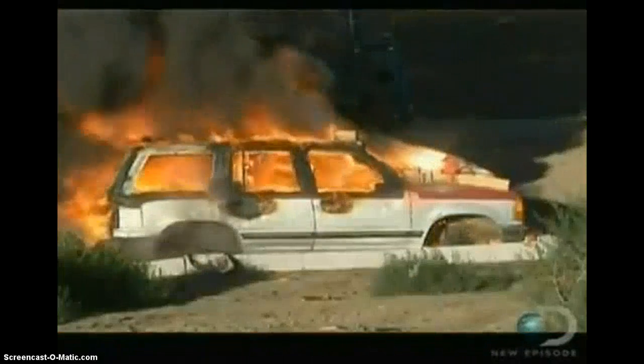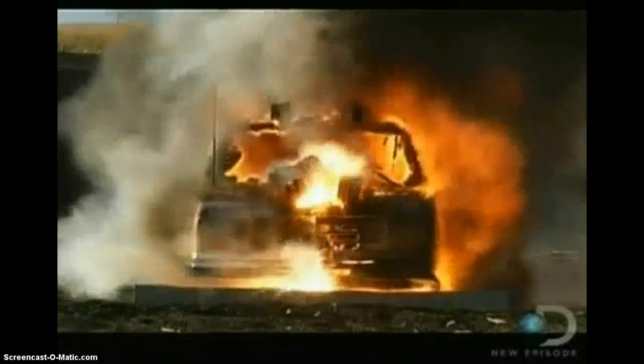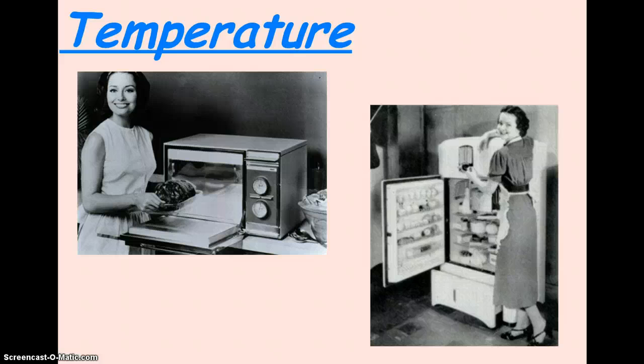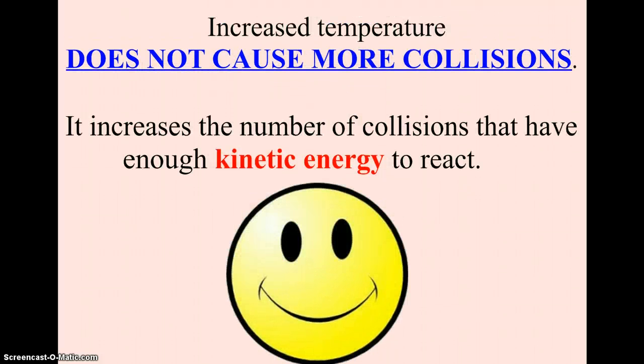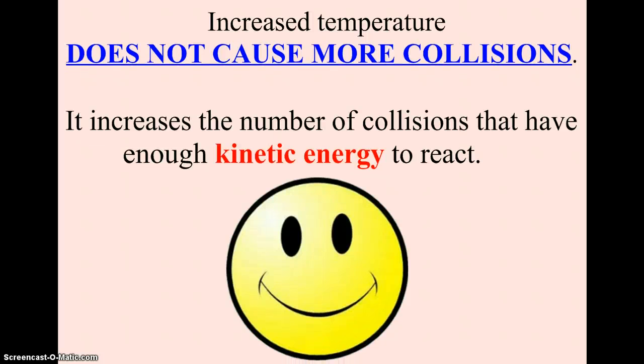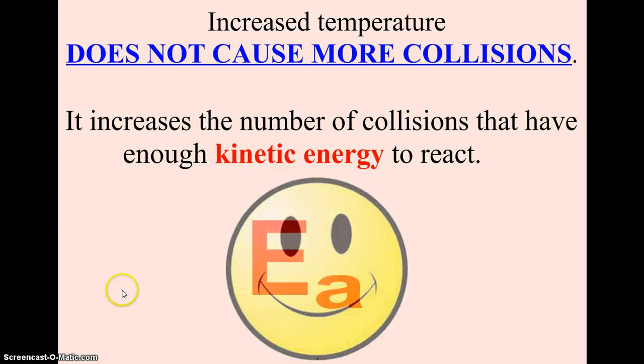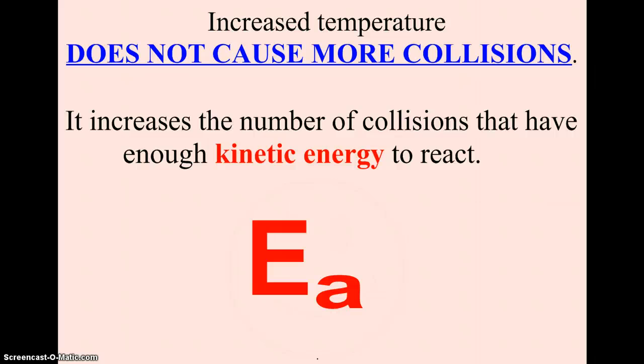Temperature. Typically when you increase the temperature of a reaction, we generally increase the rate of reaction. When you are cooking, for example, you increase the temperature to get things to cook faster. And to prevent spoiling and food going bad, we cool it down in the refrigerator or in the freezer. We're increasing the kinetic energy of the particles. The faster those particles are moving, the more likely they're going to have that proper activation energy and complete the reaction. Increased temperature does not cause more collisions, but it increases the number of collisions that have enough kinetic energy to react, which is our activation energy.